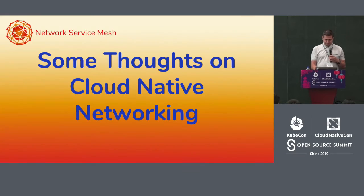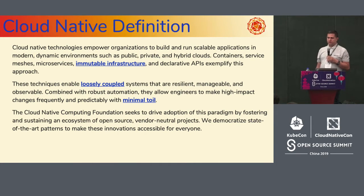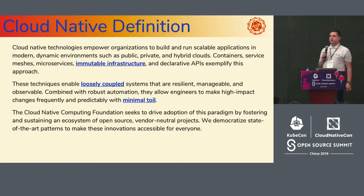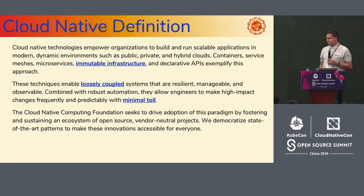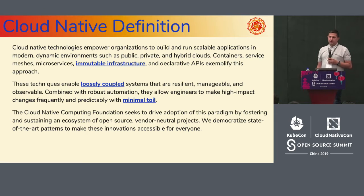This is the cloud native definition as defined by CNCF — you probably saw it at Dan's keynote today. It's very well written so please go check it if you haven't. We've outlined a couple of points we think are very important for networking done in a cloud native way: immutable infrastructure, loosely coupled systems, and minimal toil.